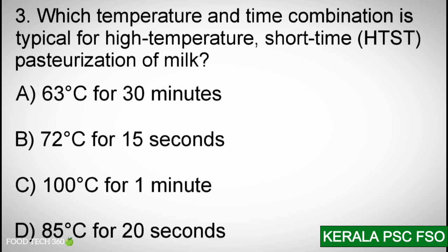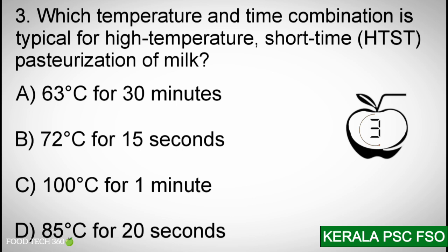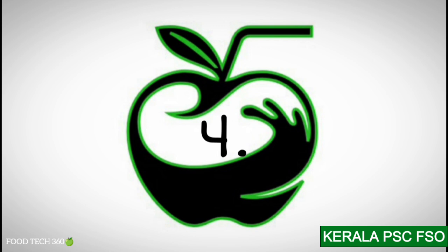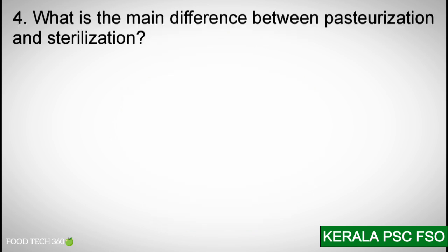Question number three: Which temperature and time combination is typical for High Temperature Short Time (HTST) pasteurization of milk? Options: A) 63°C for 30 minutes. B) 72°C for 15 seconds. C) 100°C for one minute. D) 85°C for 20 seconds. Correct answer: B) 72°C for 15 seconds.